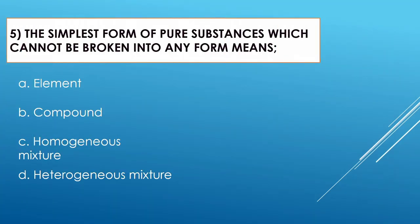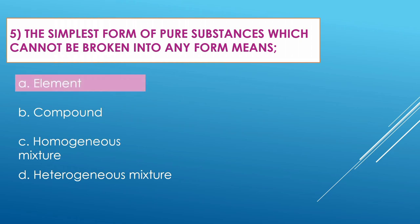Question number five: The simplest form of a substance which cannot be broken into any further form means — Option A: element. Option B: compound. Option C: homogeneous mixture. Option D: heterogeneous mixture. The correct option is element, which cannot be broken into any further form.